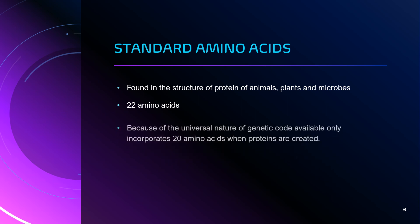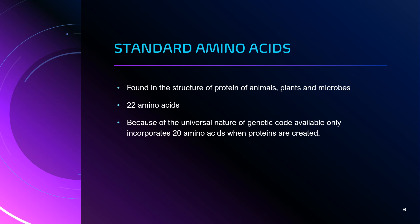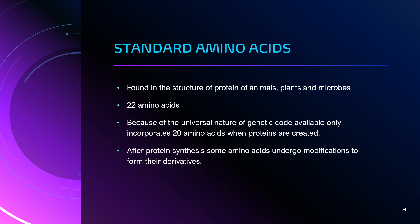This is because of the universal nature of the genetic code, which allows for the incorporation of only 20 amino acids when proteins are synthesized in the cells. This process is controlled by DNA, the genetic material of the cell. After the synthesis of proteins, some of the incorporated amino acids undergo modifications to form their derivatives.